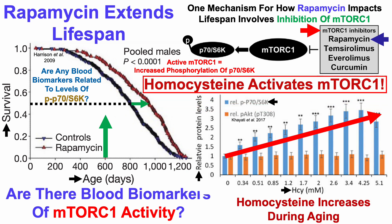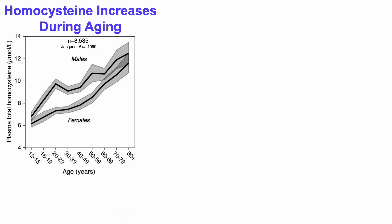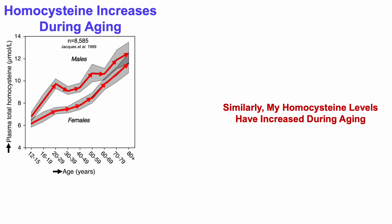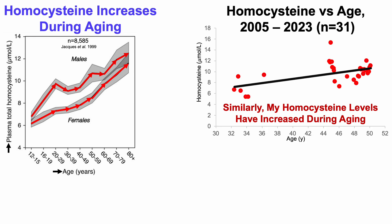Now that's important because homocysteine increases during aging, and that's what we can see here. On the y-axis, we've got plasma levels of total homocysteine plotted against age from 12 to older than 80 years old. For both males and females, we see that age-related increase for homocysteine.